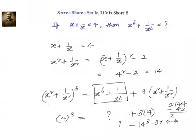Simplifying: 14 cube minus 3 times 14 equals 2744 minus 42, which gives us 2702. This is Method 1, useful for competitive exams to solve quickly.